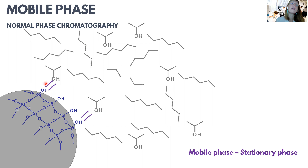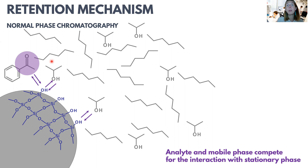As a result, the analyte and the mobile phase are competing for retention on the stationary phase — for the possibility to have an interaction with the silenol groups. Therefore, we don't want the mobile phase to have too strong eluting power. This means that these polar organic solvent molecules shouldn't be present in too great a quantity, so that they are dominantly occupying the silenol groups on the stationary phase. We want them to be there, but not too much.